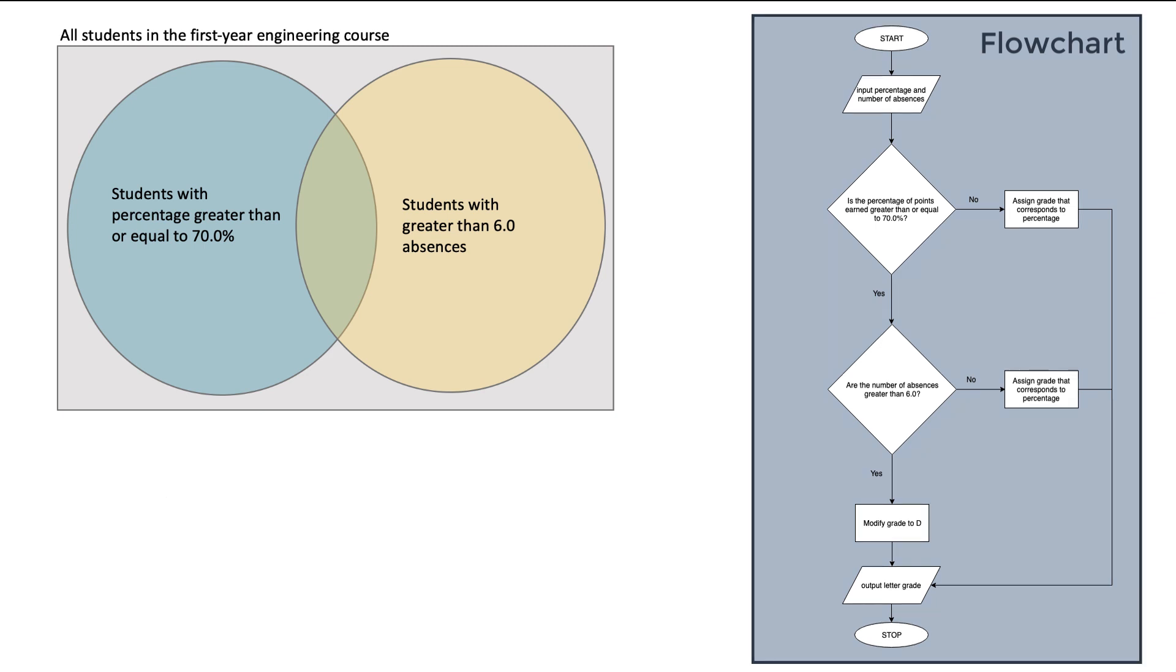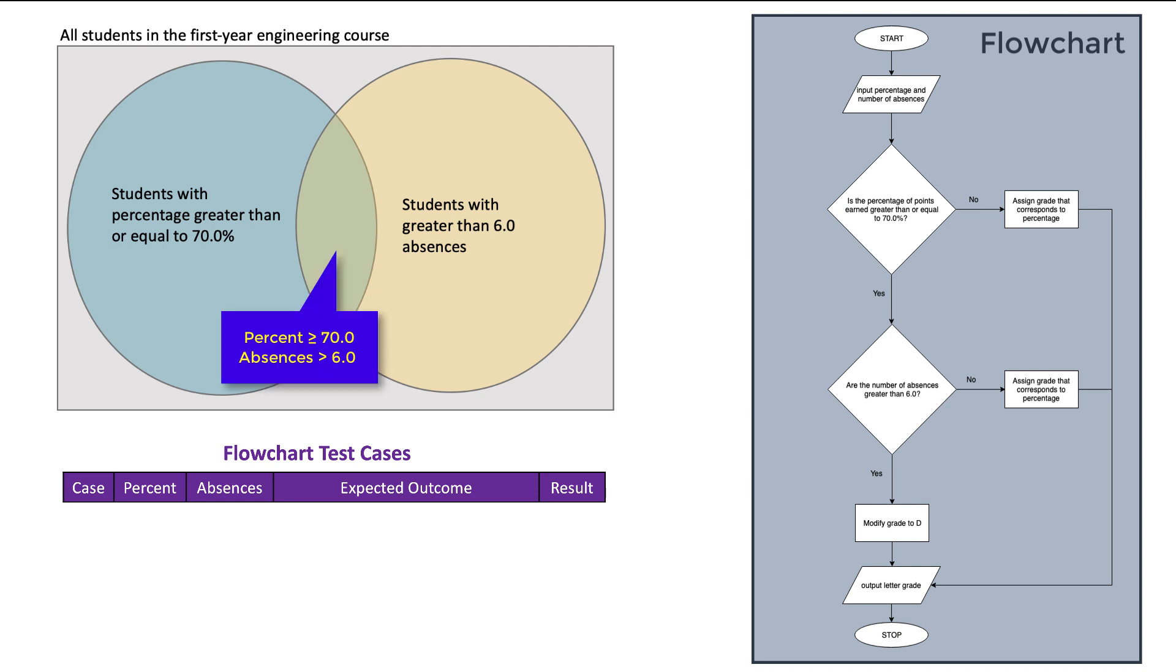Finally, we need to check to verify that all possible situations are covered by our flowchart. So let's get a test case that will give us each scenario and make sure that all paths of our diagram and our flowchart are covered. Looking at the diagram, I need the test case in the overlapping section. Let's make this case have 75.8% and 7.0 absences. This is the case where the letter grade needs to be modified to a D.